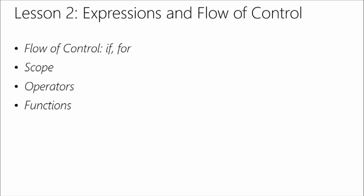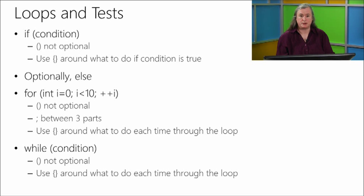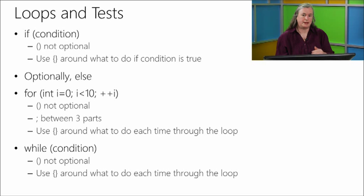Let's start with flow of control, specifically with two keywords in C++: if and for. This is standard for any application — you're going to have decisions to make. If you're writing a game, you need to say: if the character's hit points have gone below zero, then draw him falling down dead. The syntax in C++ is lowercase if, round brackets or parentheses (they're not optional), and then what your condition is going to be based on. After the if, you can have an open brace, what to do if that condition is true, and a close brace.